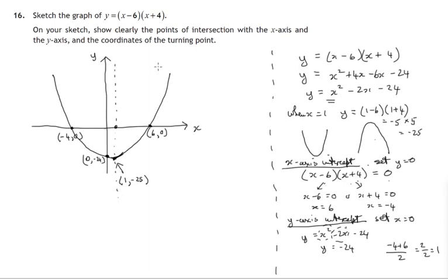So there we have the graph of y equals x minus 6 times x plus 4. It's a parabola crossing the x-axis at negative 4 and 6, with y-intercept at (0, -24) and minimum turning point at (1, -25). That's Mr Corsey signing out — thanks for watching this video.